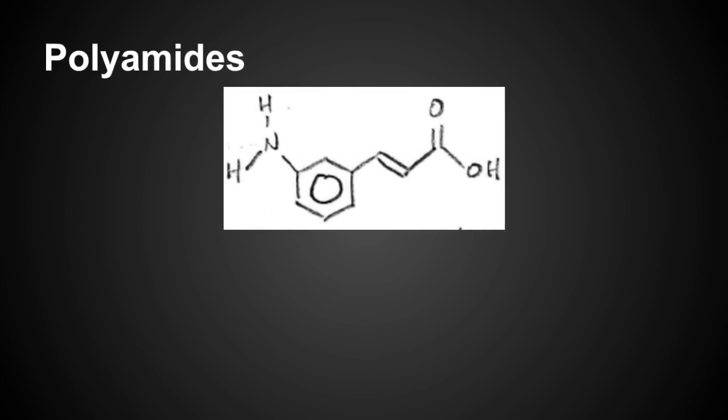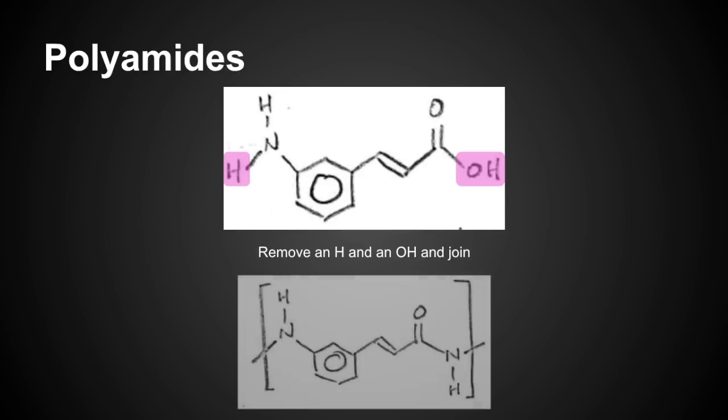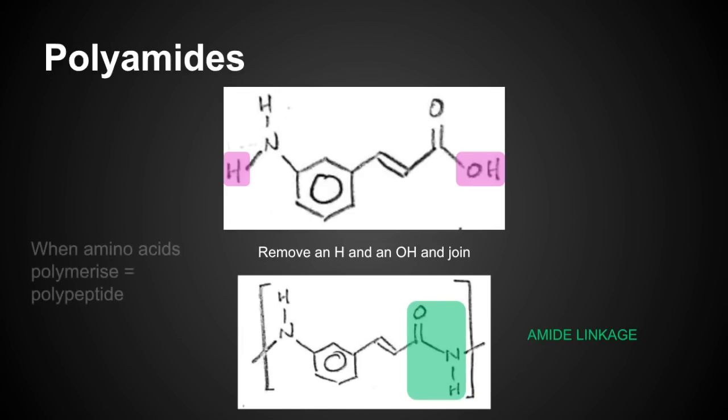Polyamides now. I'm going to polymerise this. Notice we've only got one monomer now, because we've still got the correct functional groups that we need to form an amide bond on each side. I'm going to take the OH and an H and join together. We're going to end up with that as our repeat unit. And there, in green, is the amide linkage. It's important to point out that when you join amino acids together, they still contain that same linkage, the CONH linkage, but we now call them polypeptides.